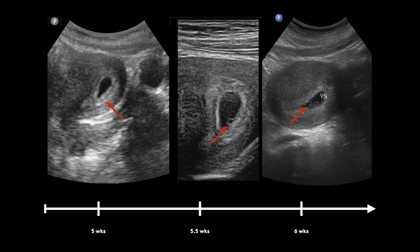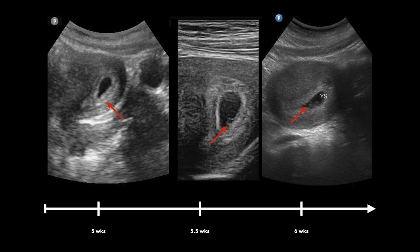The first definitive sign of an intrauterine pregnancy is the yolk sac. If you see a yolk sac, you can give the patient reassurance that they have an IUP. That is the answer on any bedside ultrasound exam — the yolk sac is the first definitive sign of intrauterine pregnancy.